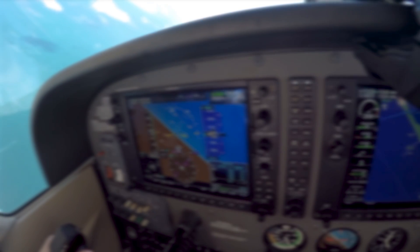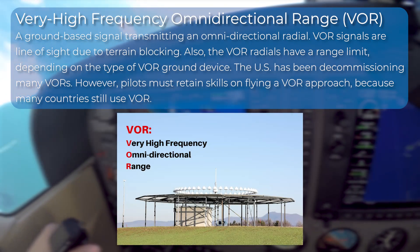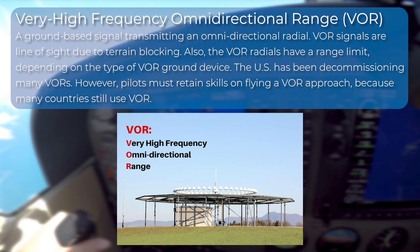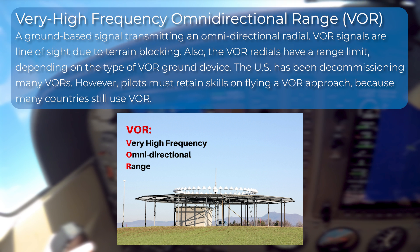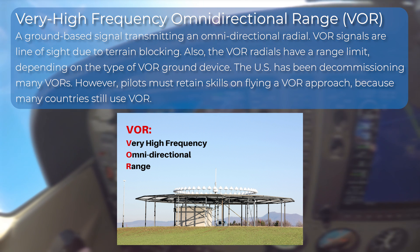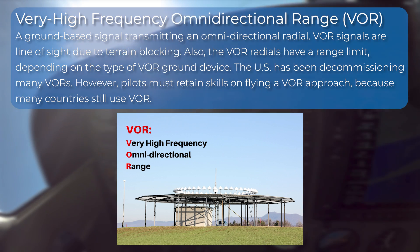Very high-frequency omnidirectional range approaches use a ground-based signal transmitting an omnidirectional radial. VOR signals are line-of-sight due to terrain blocking, and VOR radials have a range limit depending on the type of VOR ground device. The U.S. has been decommissioning many VORs; however, pilots must retain skills on flying a VOR approach because many countries still use VOR.